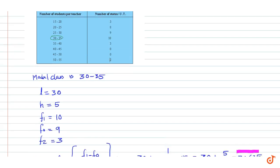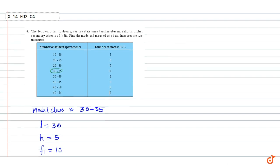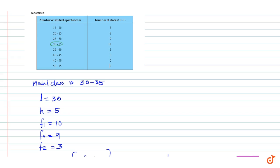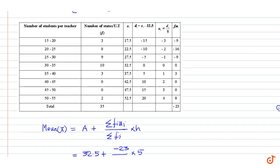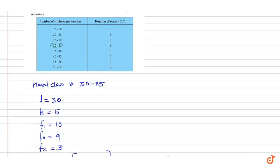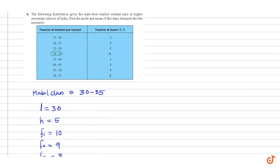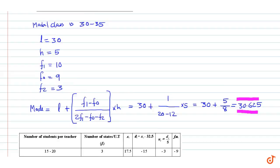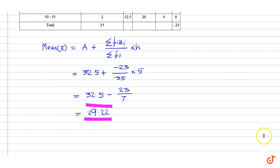Therefore, we can say that the average number of students per teacher is 29.22. That is our answer to the question.